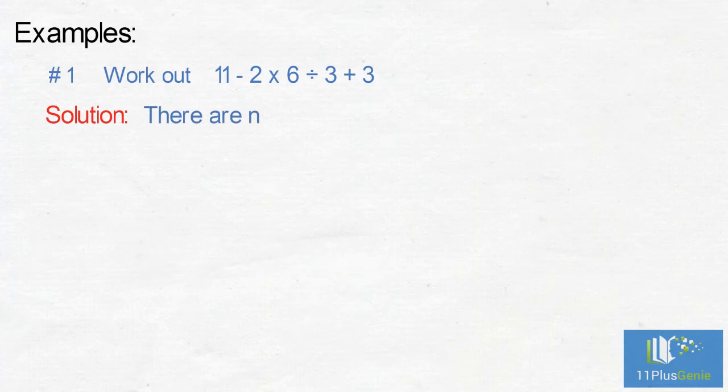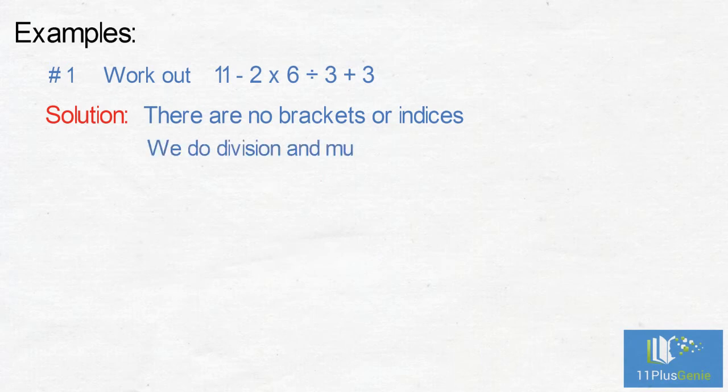Examples. Number one: work out 11 minus 2 times 6 divided by 3 add 3. Solution: are there any brackets? No. Are there any indices? No. Is there division or multiplication? Yes, we do this from left to right.